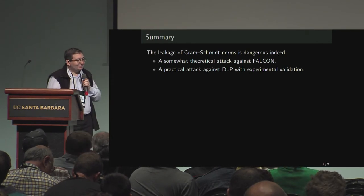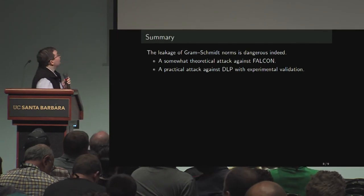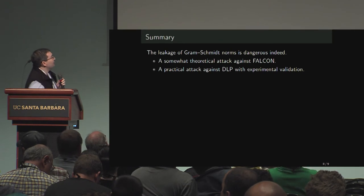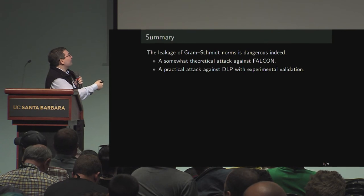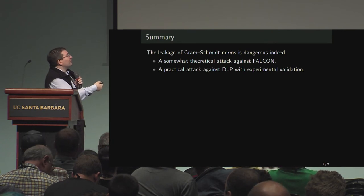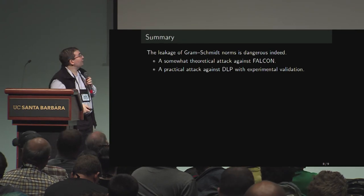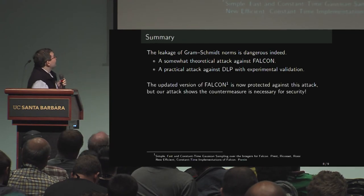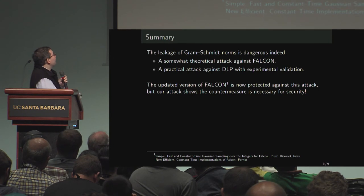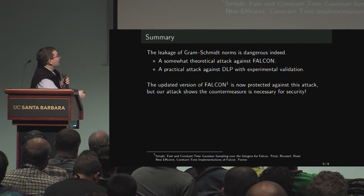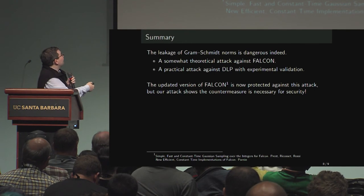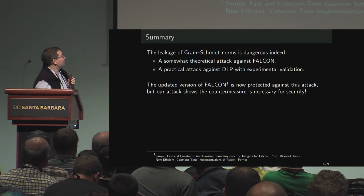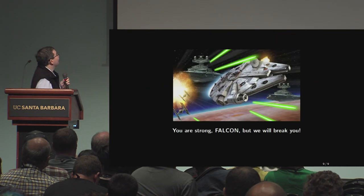The conclusion is that leakage of the Gram-Schmidt norms is quite dangerous. Against Falcon it's quasi-polynomial, so it's somewhat theoretical, but for DLP it's very concrete. There is an updated implementation of Falcon that patches this leakage, but it's really important to apply the countermeasure for security. Thank you very much.